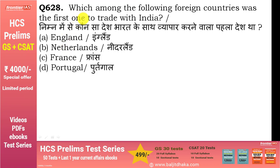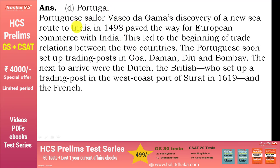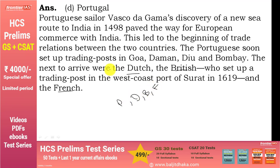Which among the following foreign countries was the first one to trade with India? वो था Portugal। Vasco da Gama 1498 में आया था। Portugal ने trading posts set up किए Goa, Daman, Diu और Bombay में। Chronological order: Portuguese, Dutch, British, French।